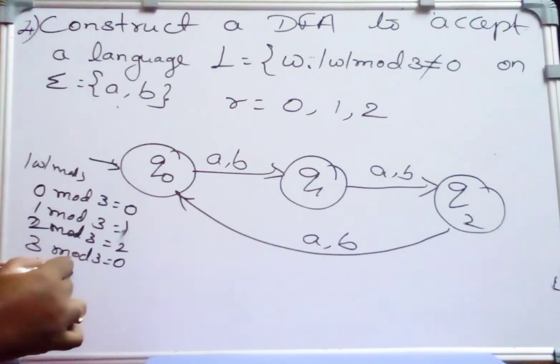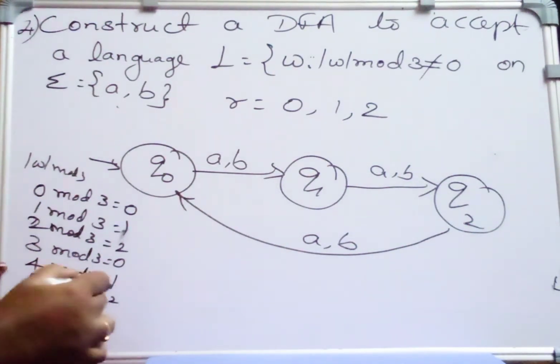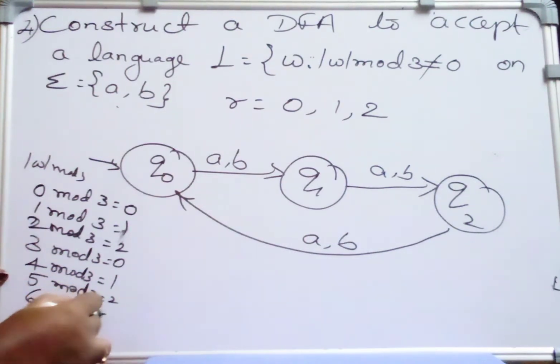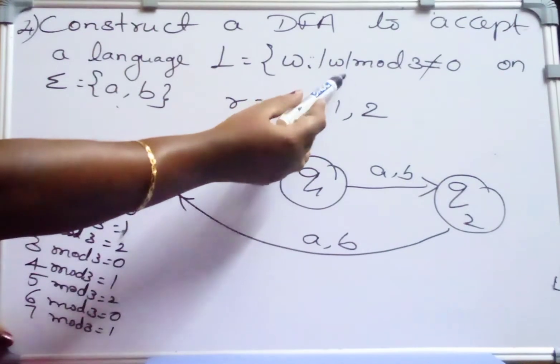4 mod 3 if I take, 4 mod 3 is 1. 5 mod 3 if I take, 5 mod 3 remainder is 2. 6 mod 3 remainder is 0. 7 mod 3 remainder is 1. So here what is the condition given? W mod 3 should not be equal to 0.